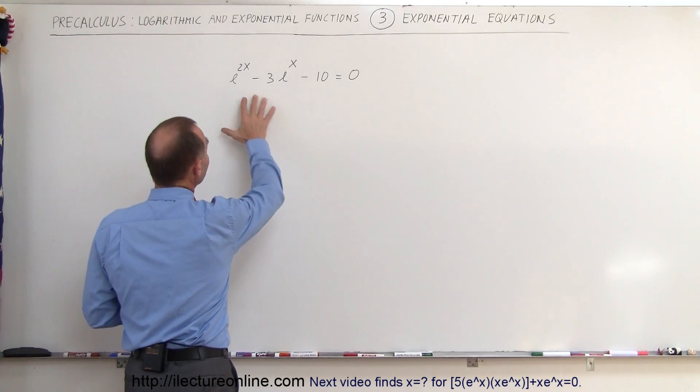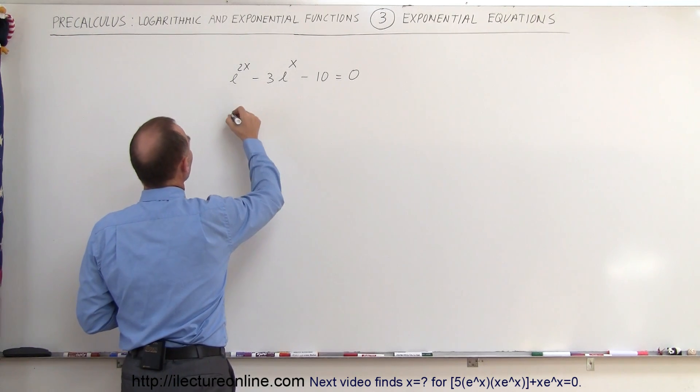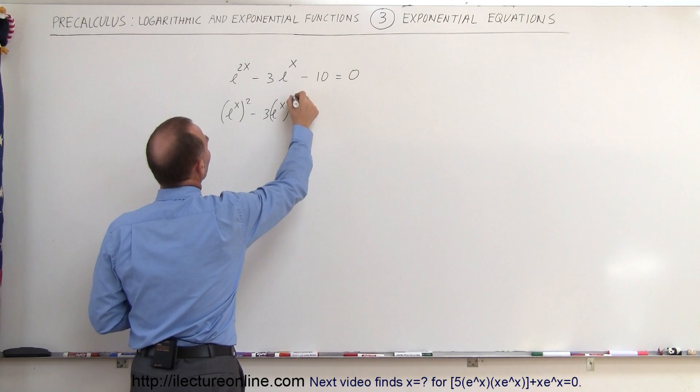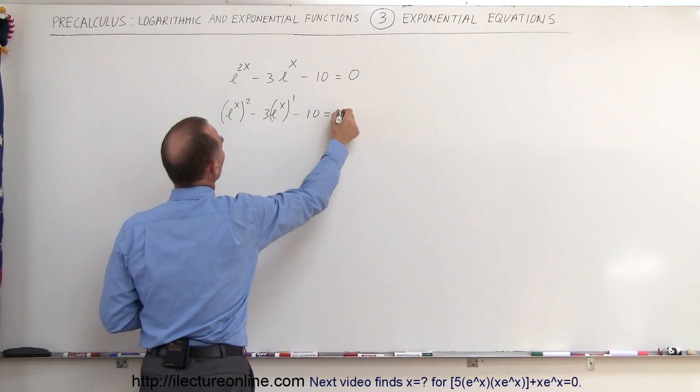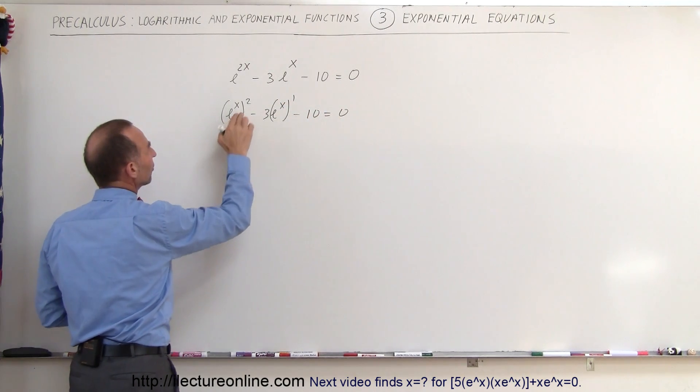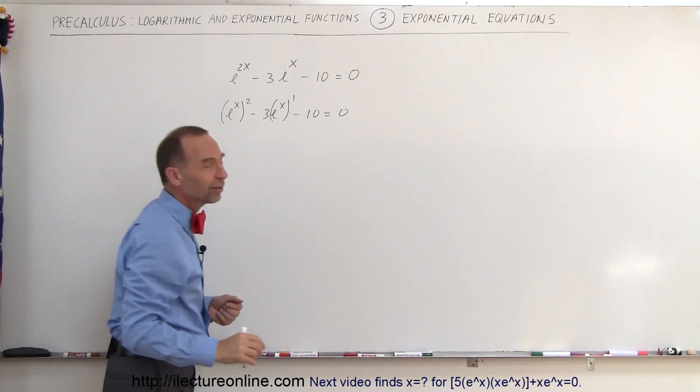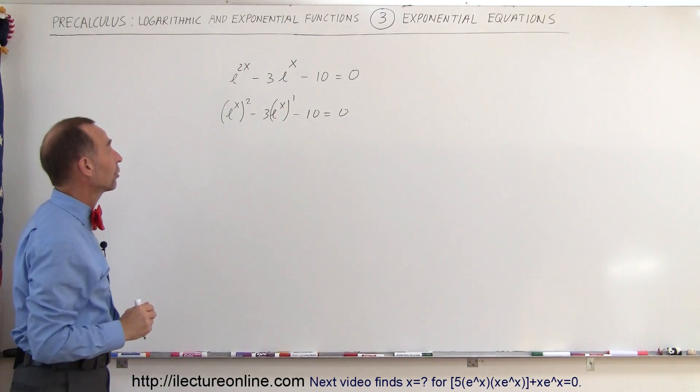So let's say that we take this and we rewrite it as follows: e to the x power quantity squared minus 3e to the x to the first power minus 10 equals 0. So you have something squared minus something to the first power minus a constant equals 0—that definitely does look like a quadratic equation.